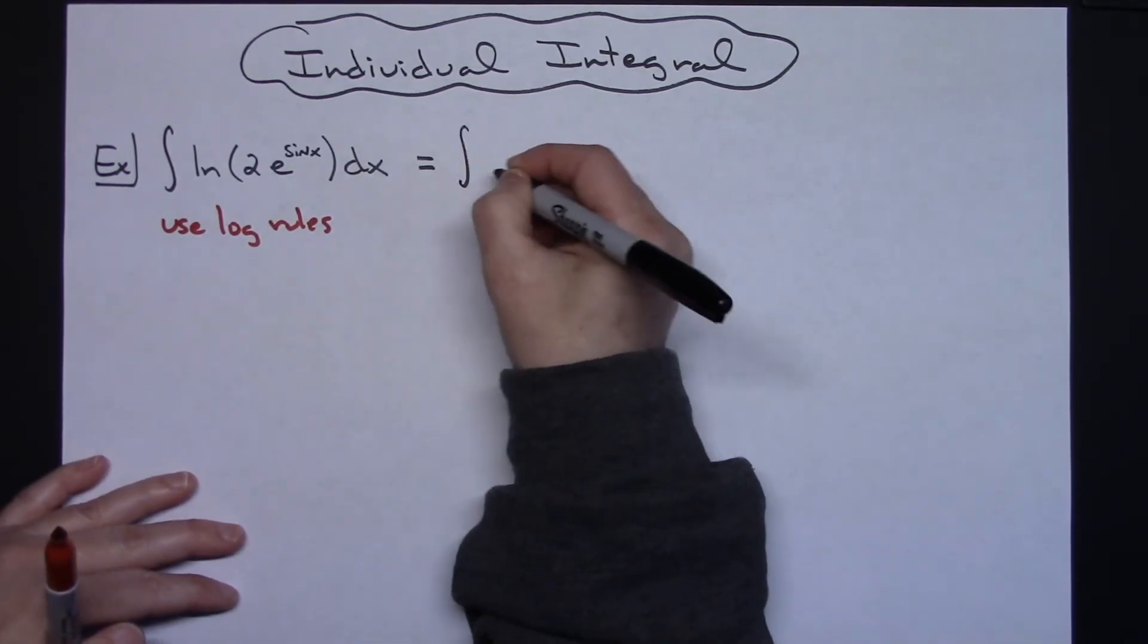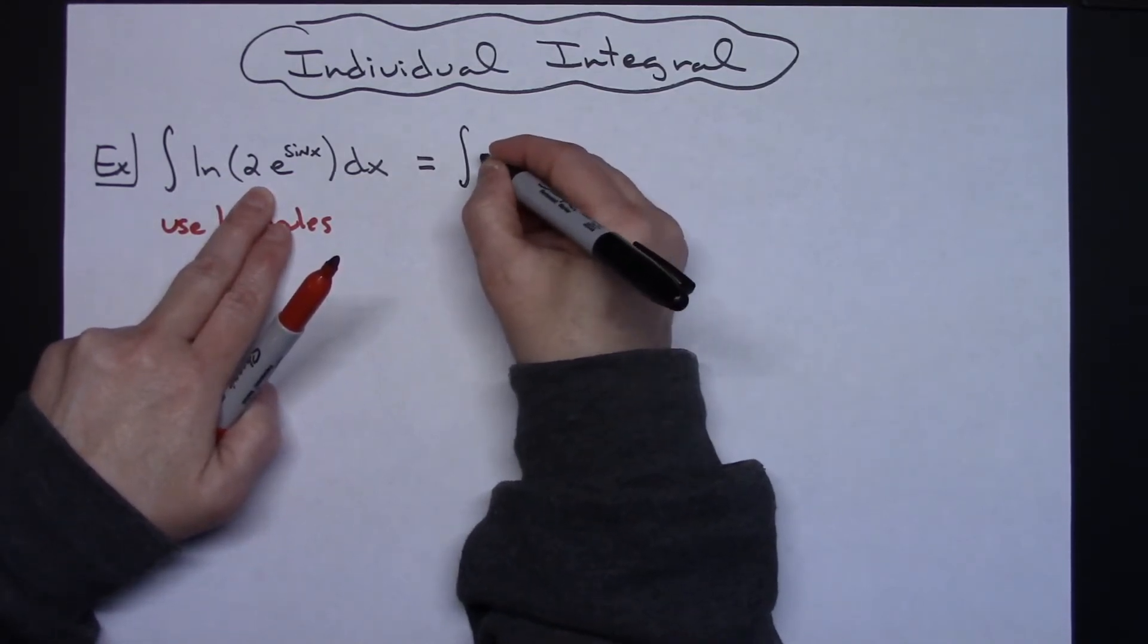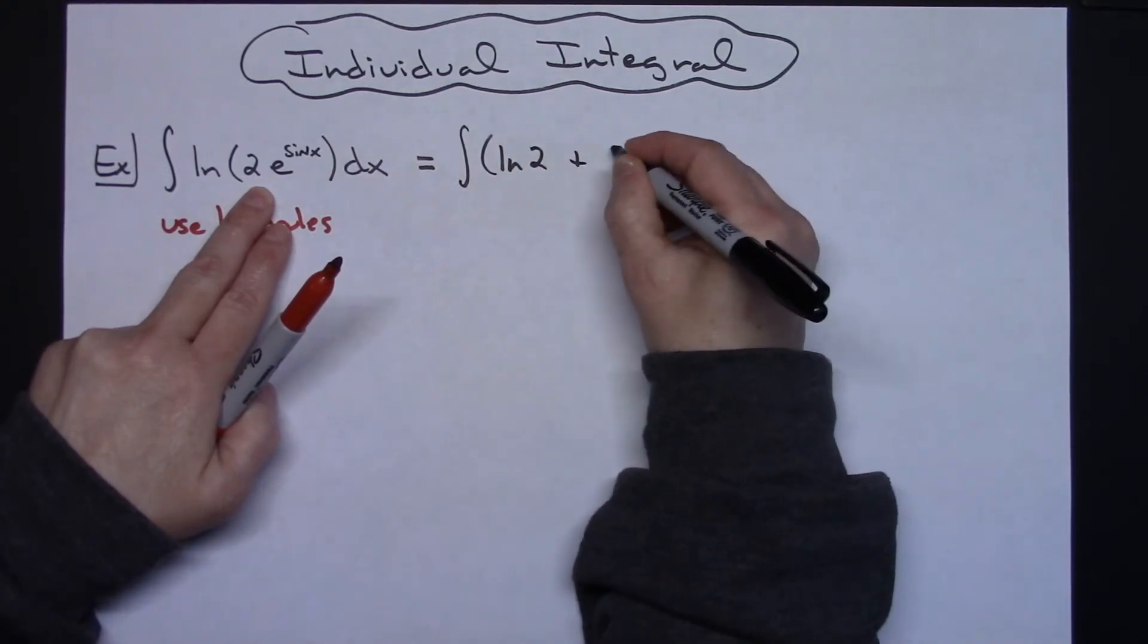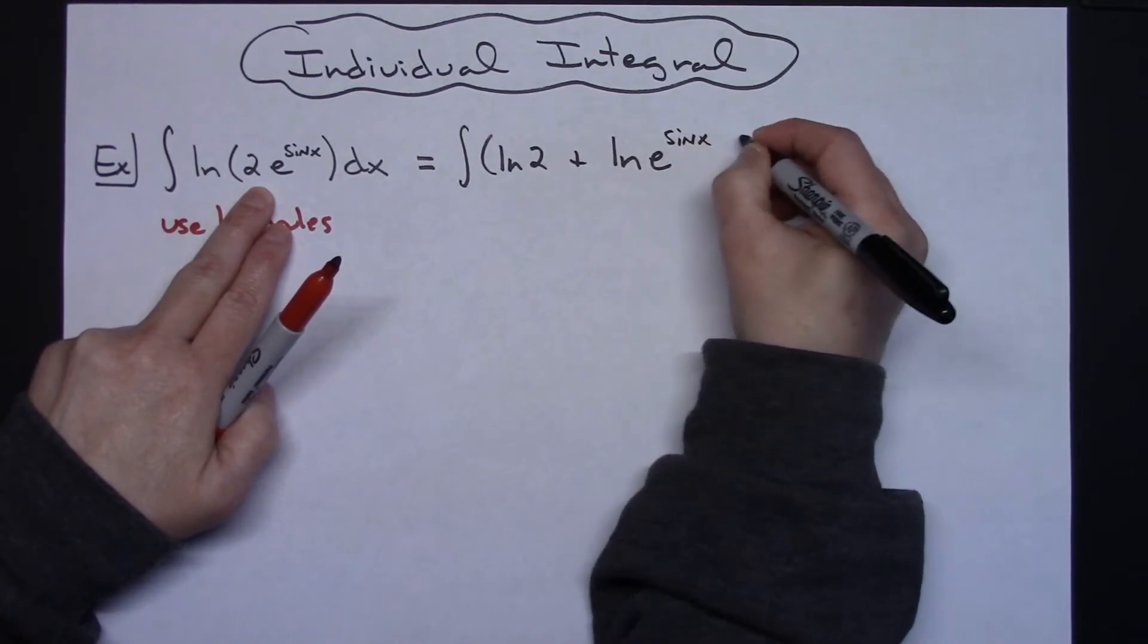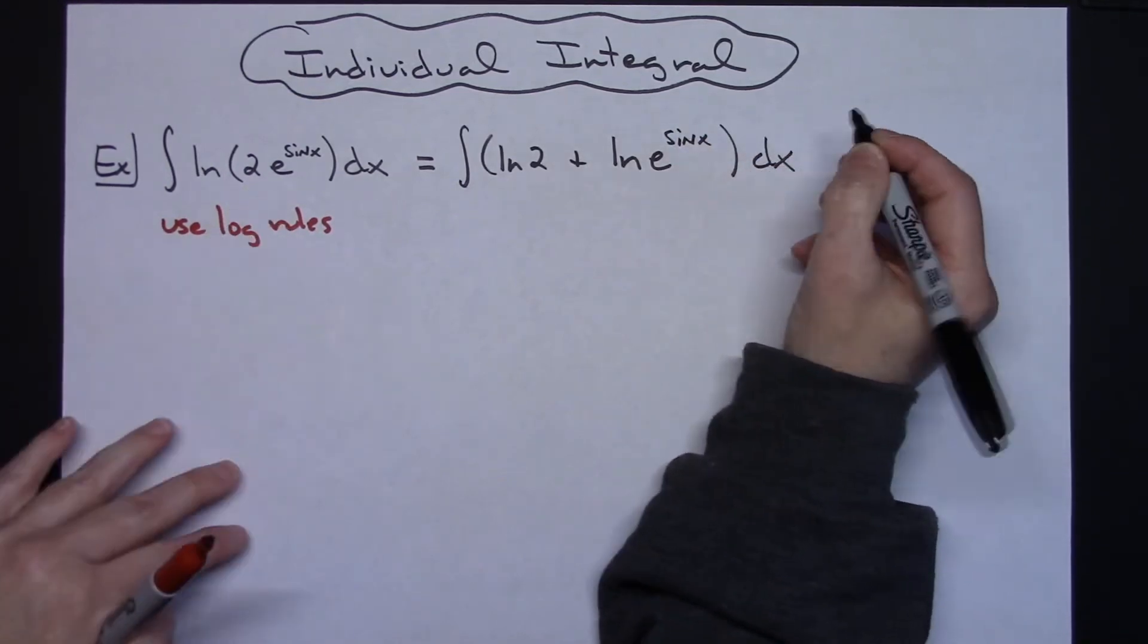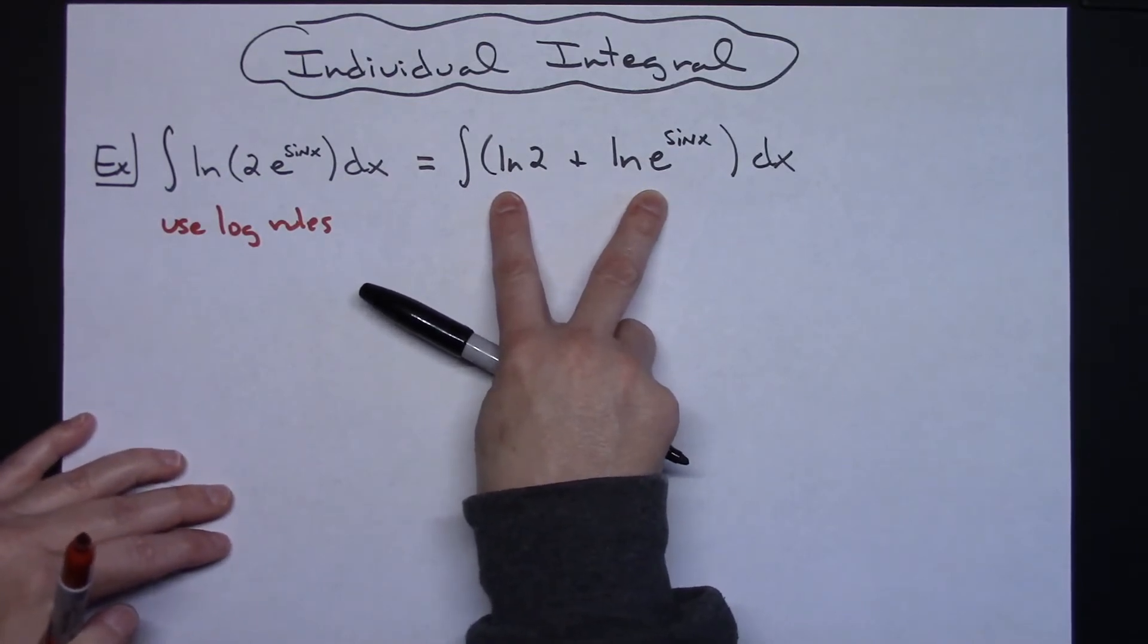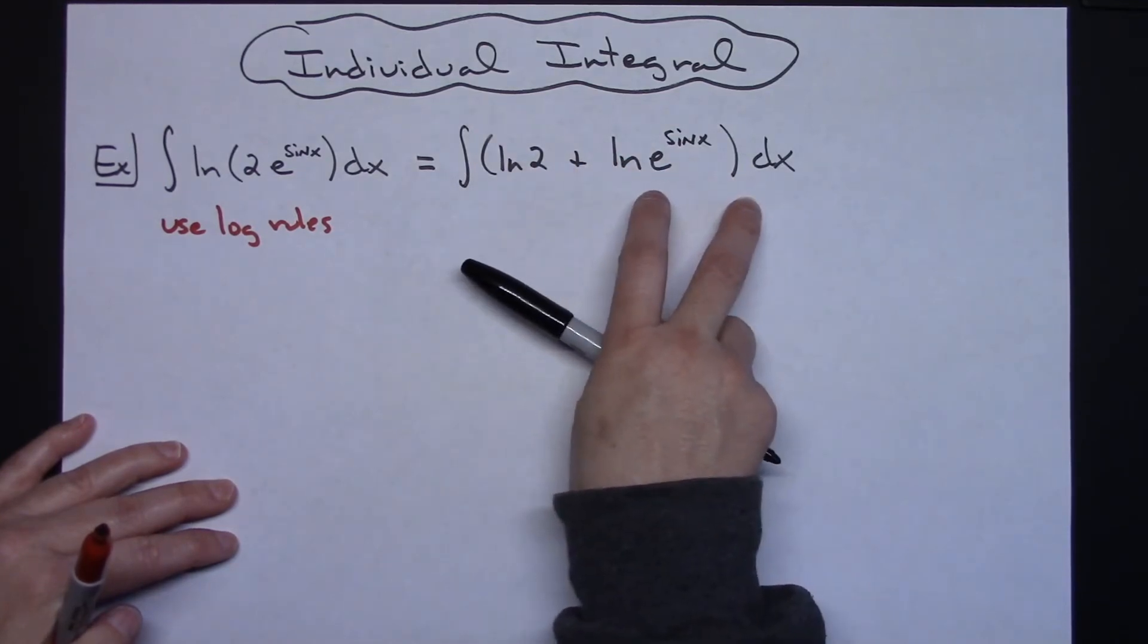I'm going to have the integral. Multiplication of logs means I can expand with addition. So I'm going to have natural log of 2 plus natural log of e raised to the sine x, dx. I've just taken this log expression, expanded it into two individual logs with the addition sign in between, and I am integrating that entire quantity.